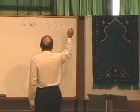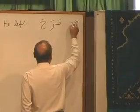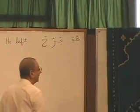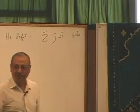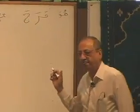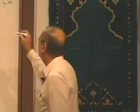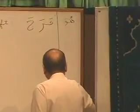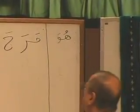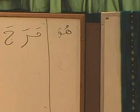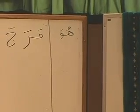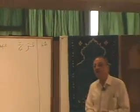Now, I'm writing here: huva. Are you with me? Do you see huva? I'll put a line here. Brother Akbar, is the red color coming okay? I'll try again. What is the next pronoun in our sequence? Homa. Okay, homa.